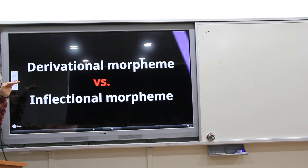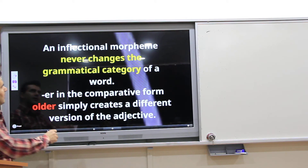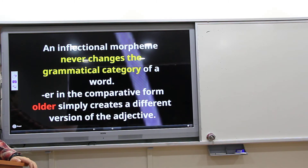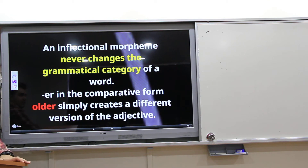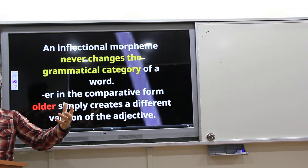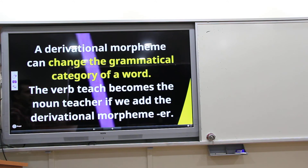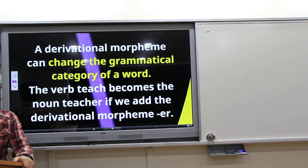So, what is the difference between derivational morphemes and inflectional morphemes? Inflectional morphemes never change the grammatical category of a word. For example, '-er' in the comparative form 'older' simply creates a different version of the adjective. A derivational morpheme, on the other hand, can change the grammatical category — the word 'teach' becomes the noun 'teacher' when we add the derivational morpheme '-er.'